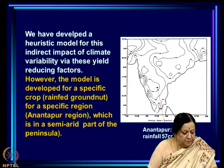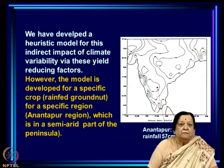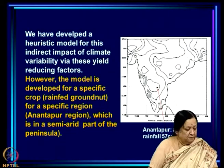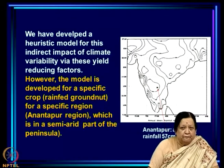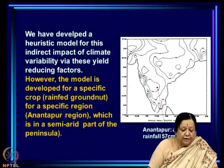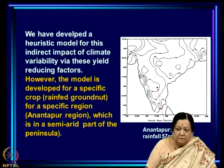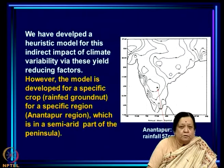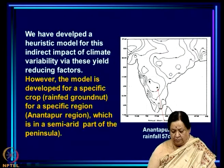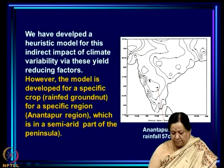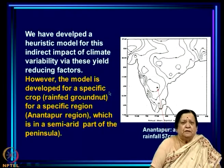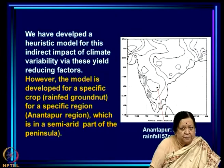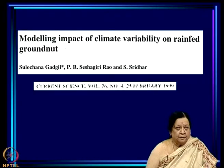The triggering of pests and diseases by weather is well known — for example, pickles are more likely to develop fungus in very humid weather. The model I am going to discuss is specifically for rain-fed groundnut, the specific variety TMV2, and the specific Anandpur region, which is in the semi-arid peninsula receiving only 57 centimeters of rain. However, the model can be generalized for other crops and regions as well.